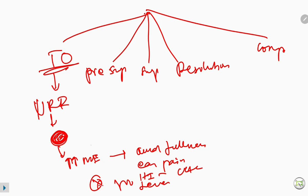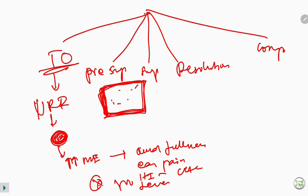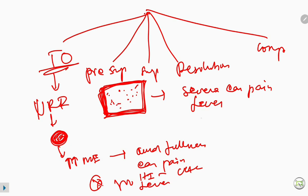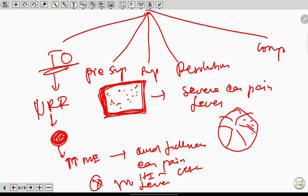In the pre-suppurative stage, pathogens enter the middle ear through the Eustachian tube, causing middle ear mucosal edema and infection. There is hyperemia and formation of exudates. The patient presents with severe ear pain and fever. The typical tympanic membrane appearance on otoscopy is a cartwheel appearance.